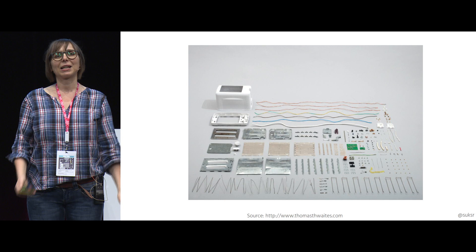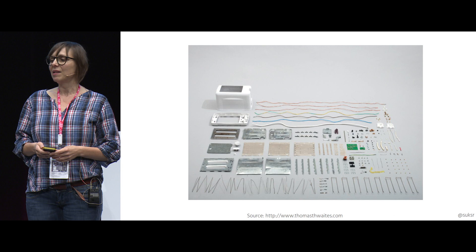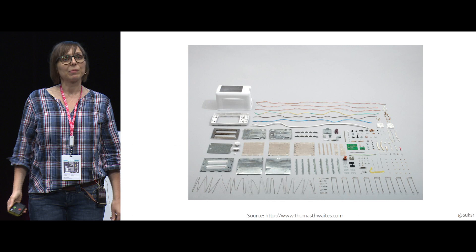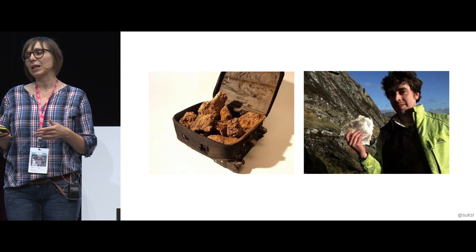He was quite surprised that this very cheap toaster of £3.94 was consisting of 404 different parts made of 100 plus different materials. Since he doesn't have his entire lifetime to spend on this project, he focused on five of them: steel, mica, copper, nickel, and plastic. And he went out on a quest for all these materials, going to a remote iron mine in the north of England and trekking to the highlands of Scotland in search of mica.